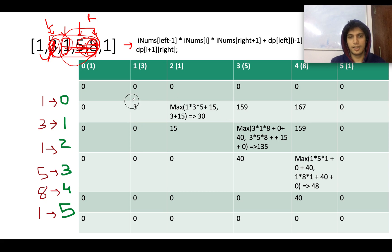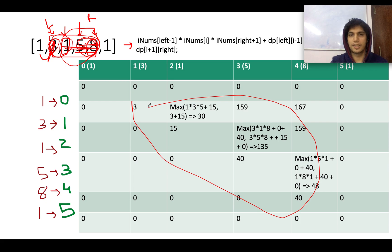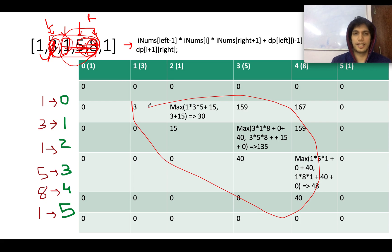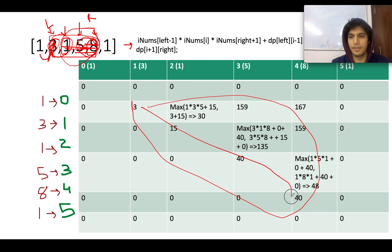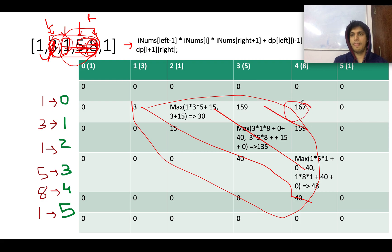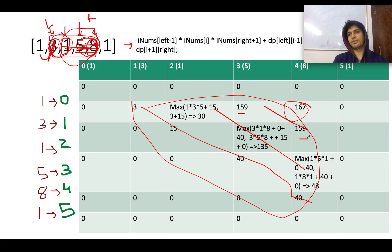I have filled in all these values using this algorithm. For window size 1 you get a set of values, window size 2 gives another set, window size 3 another set, and window size 4 gives the final value. Every time you are calculating a value, you will be using pre-calculated values from smaller windows.